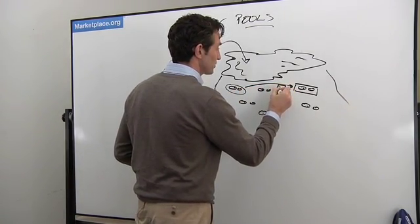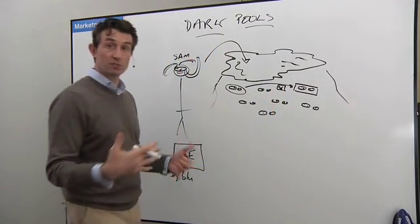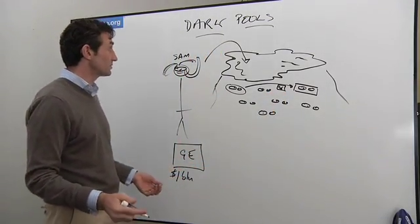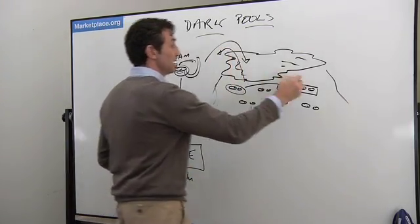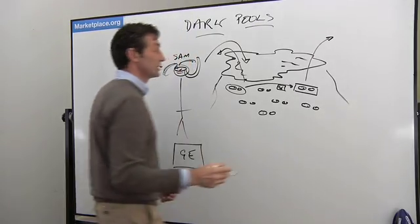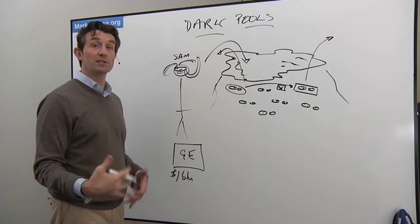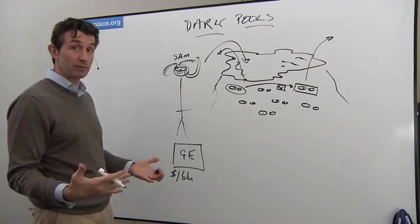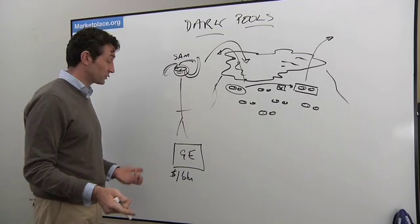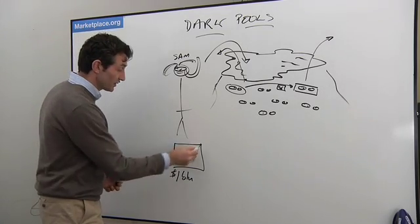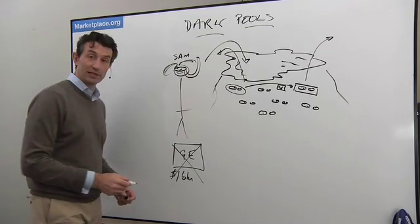So the transfer is made. So our GE shares go across. Once the transaction's made at the price that Sam was looking to sell at, everybody hops back out and they get back on with their lives. The first thing that Sam does, or one of the first things that Sam does, is he announces to the world that he's made this trade. He's a public company. He's a public pension fund. He's got to be upfront about his trades. So he lets people know that he sold that billion dollars in GE.